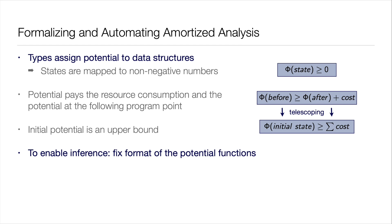A slightly more technical slide: it's called automatic amortized resource analysis — an automation of amortized analysis you might remember from your algorithms course. You can think of a program as a control flow graph, and at every node you define a potential function. This potential function must be defined so that the potential at a node, no matter what the program state is, is sufficient to cover the cost of the next possible transitions and the potential at the next node. If you do that, the initial potential is an upper bound on the cost you will incur through the program no matter which path you take.